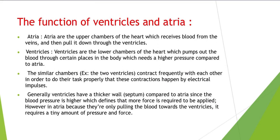The two ventricles or the two atria contract simultaneously with each other in order to do their tasks properly, and these contractions happen by electrical impulses. Generally, ventricles have a thicker wall compared to atria, because the blood pressure is higher, which means more force and pressure is required. In atria, because they are only pushing the blood towards the ventricles, it requires only a small amount of pressure and force.